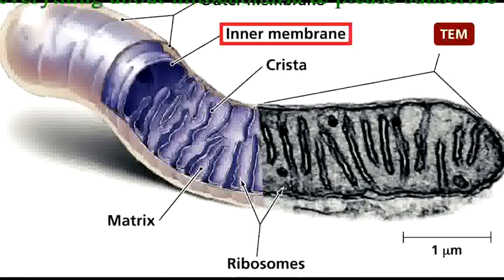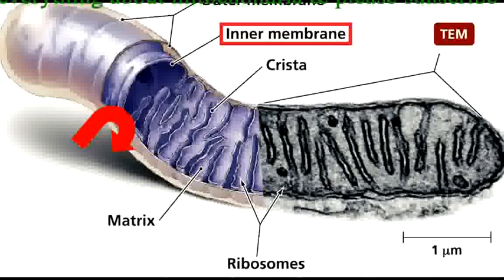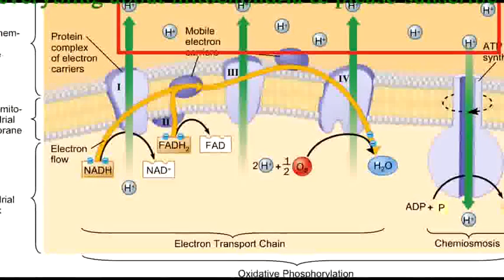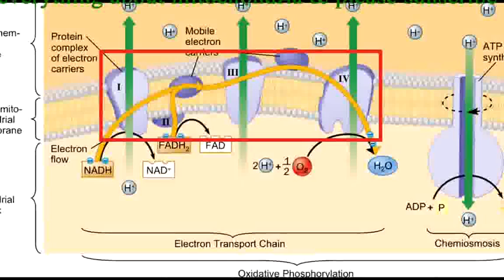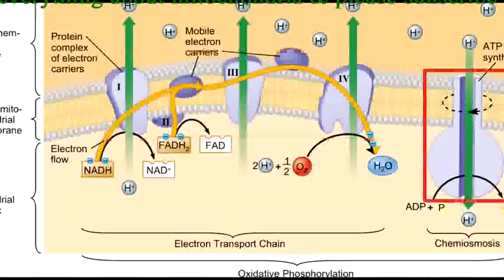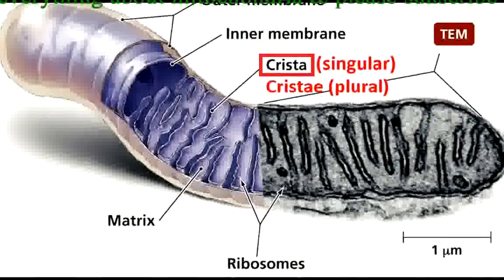The inner membrane has more restricted permeability, which is important for the formation of a proton gradient across the inner membrane during ATP synthesis. Please see our video on cellular respiration for more information. The inner membrane also contains the electron transport chain proteins and ATP synthase enzymes. Cristae are folds in the inner membrane, which increase its surface area and make cellular respiration more efficient.